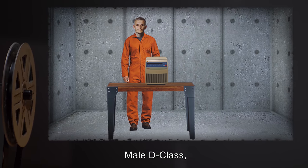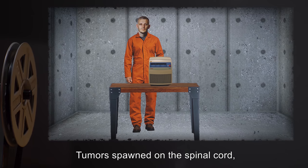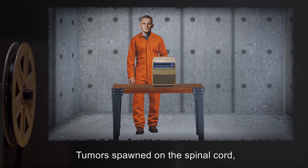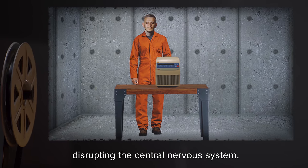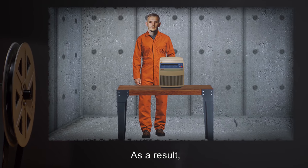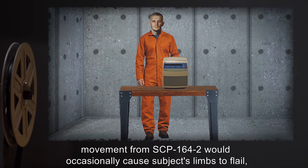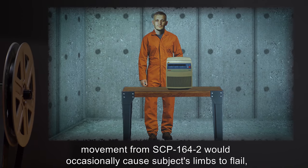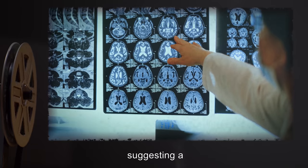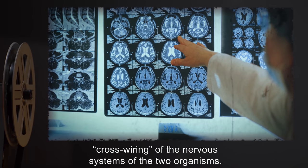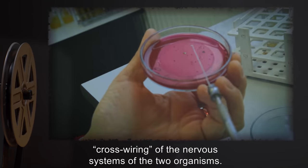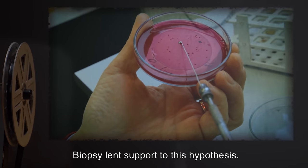Male D-Class, 30 years old: Tumors spawned on the spinal cord, disrupting the central nervous system. As a result, movement from SCP-164-2 would occasionally cause the subject's limbs to flail, suggesting a cross-wiring of the nervous systems of the two organisms. Biopsy lent support to this hypothesis.